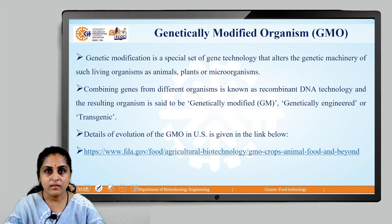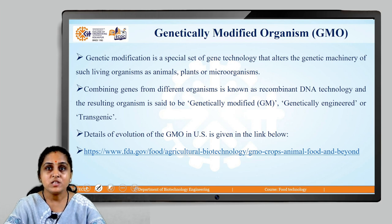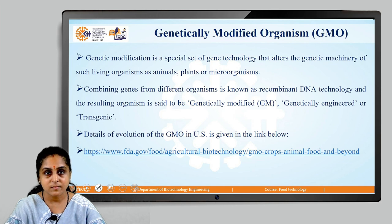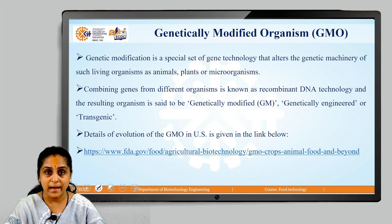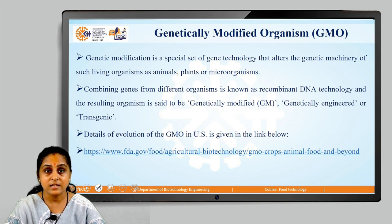Let's begin with genetically modified organisms. Genetic modification is a set of technologies — gene technologies — which alter the genetic machinery or mechanism of living organisms such as animals, plants, or even microorganisms. Combining genes from different organisms is known as recombinant DNA technology, and the resulting organism is said to be genetically modified, genetically engineered, or a transgenic organism.